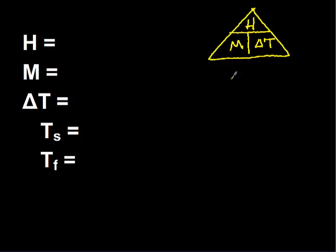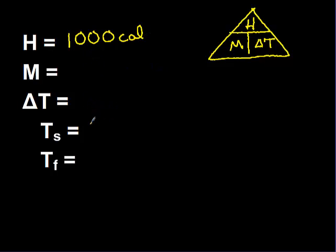Let's say for example I want to find a problem dealing with mass and I want to solve for mass. I'm just going to throw in some numbers here. Let's say we have 1,000 calories, and we know that in those 1,000 calories the temperature changes from 20 degrees Celsius to 30 degrees Celsius. The first thing we need to know is that we want to solve for mass, so I'm going to put a question mark there.